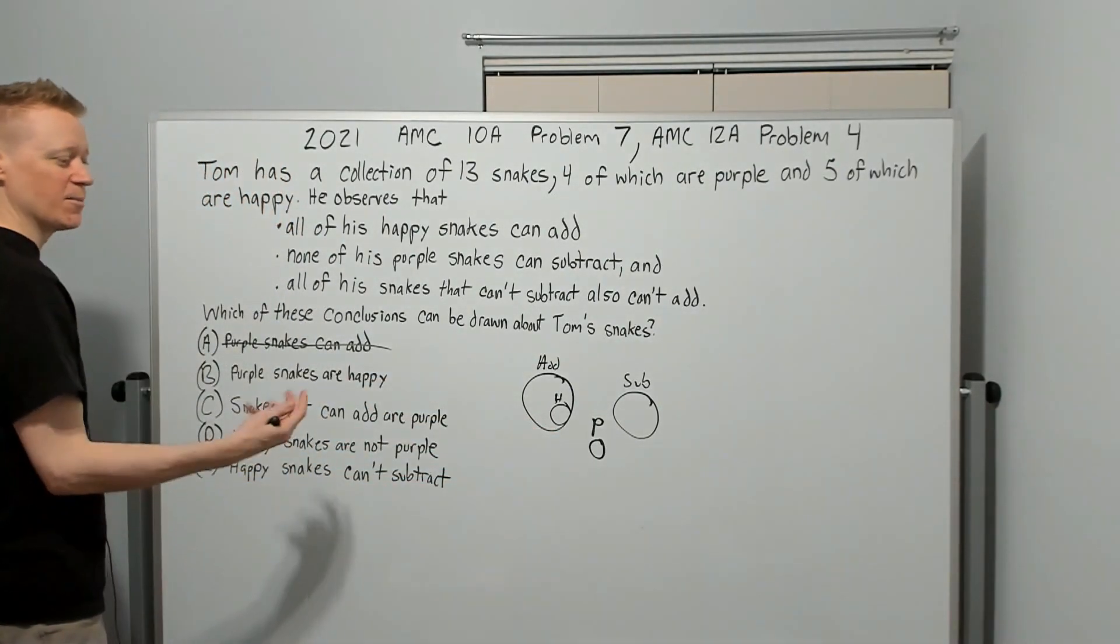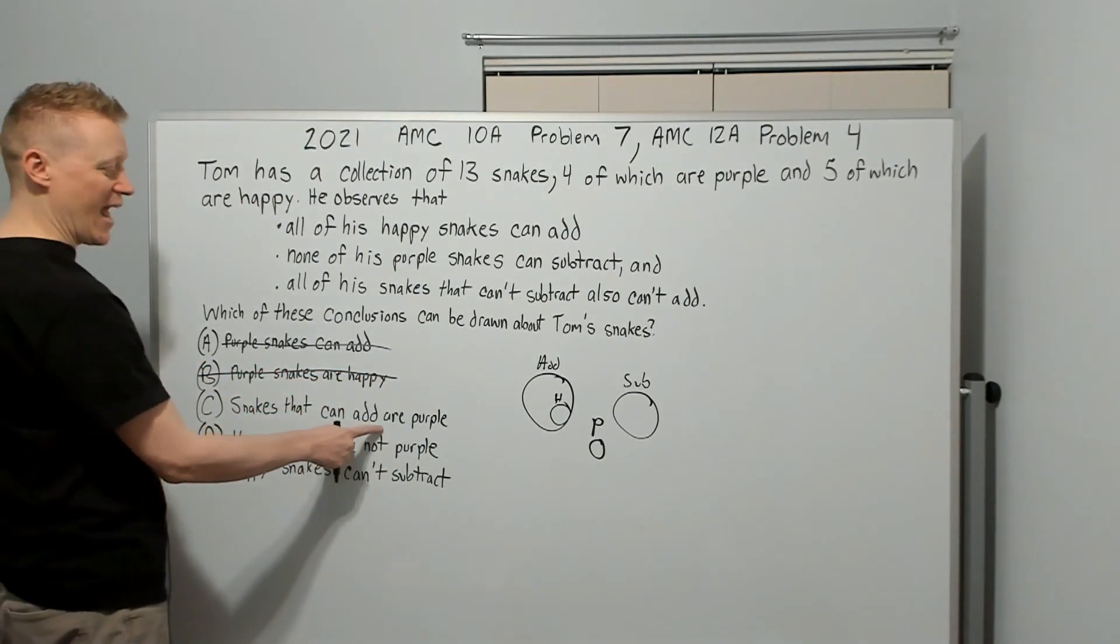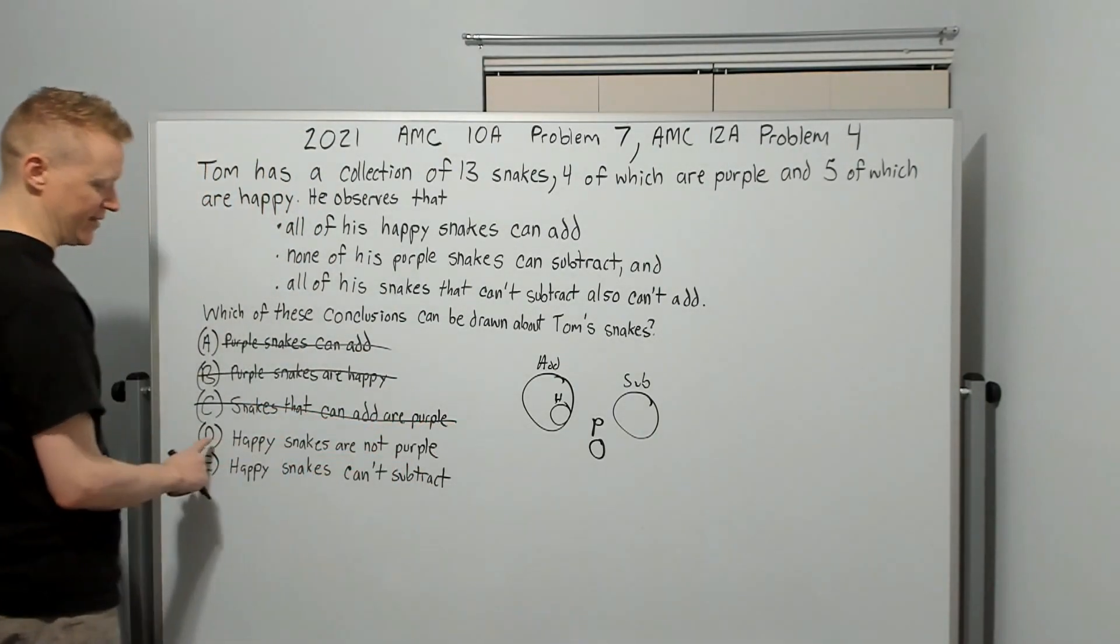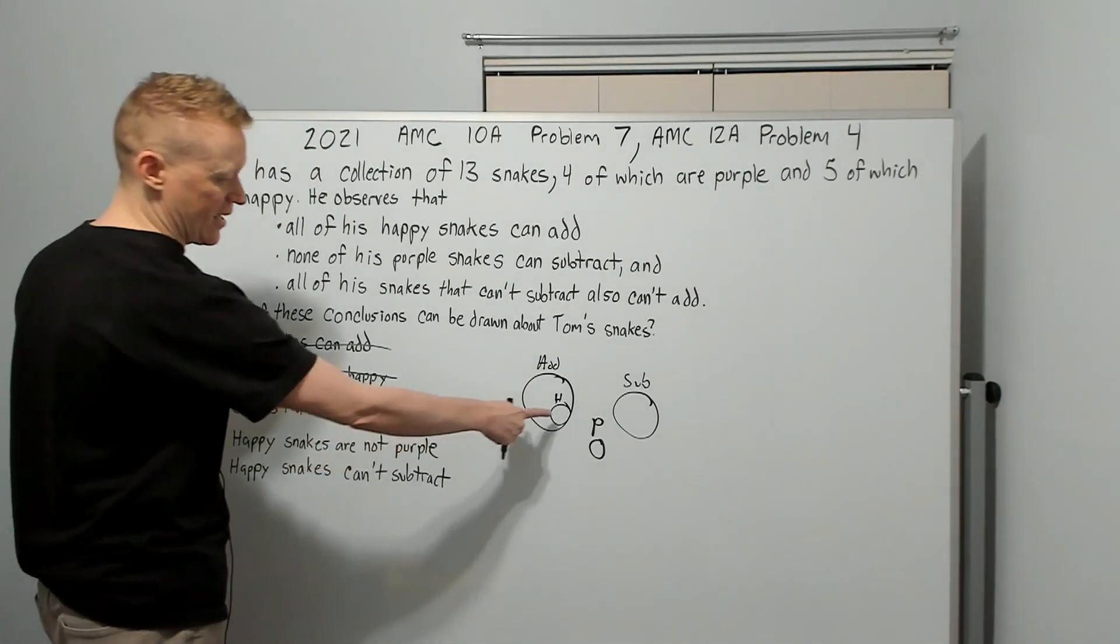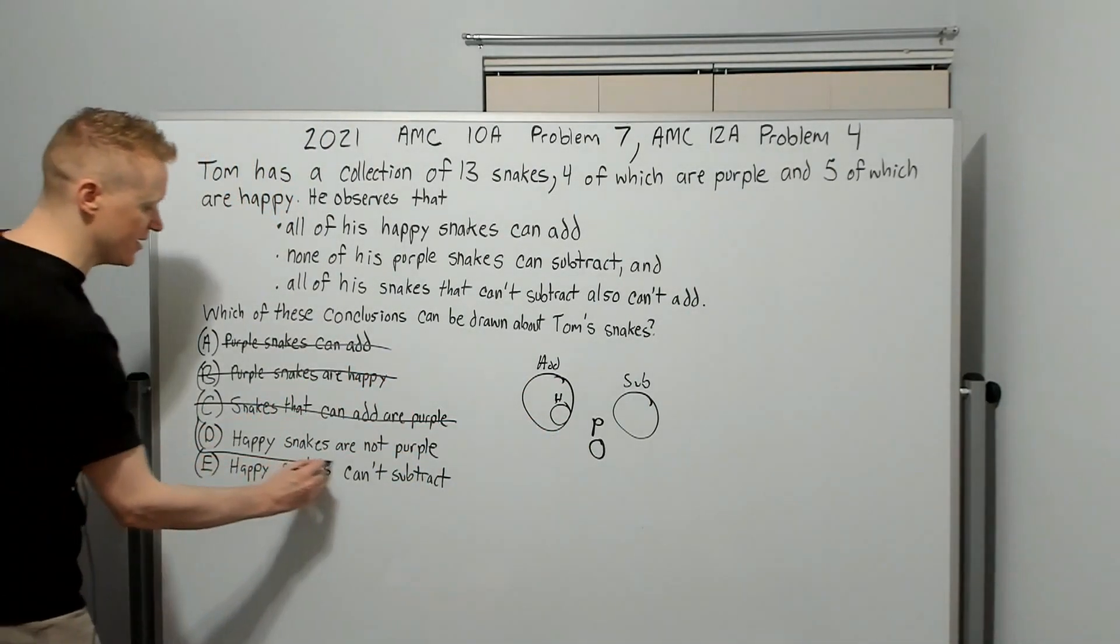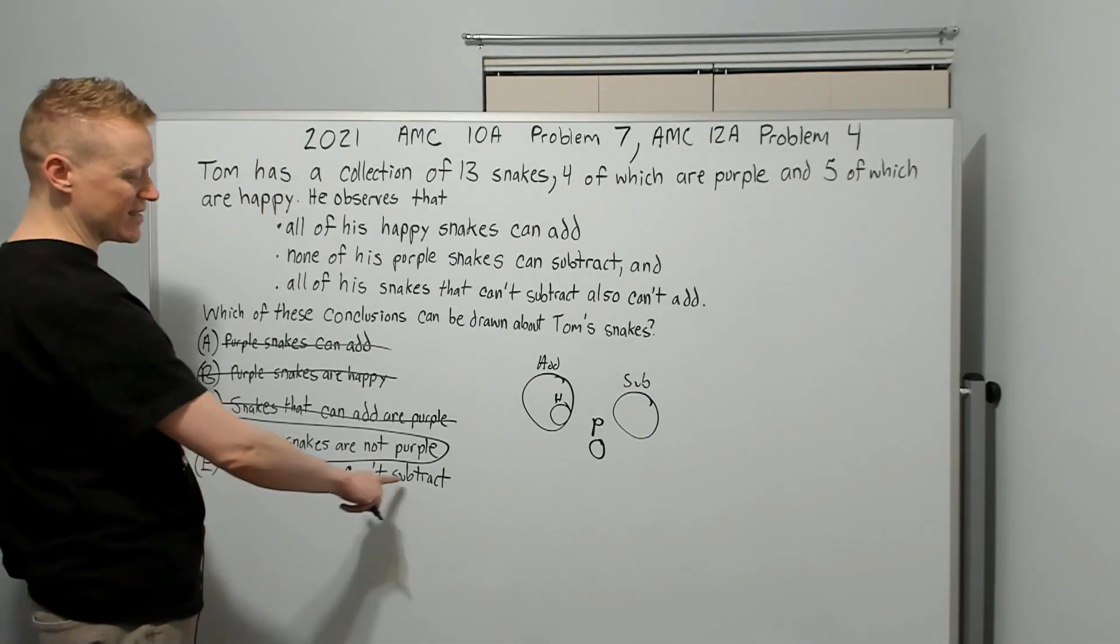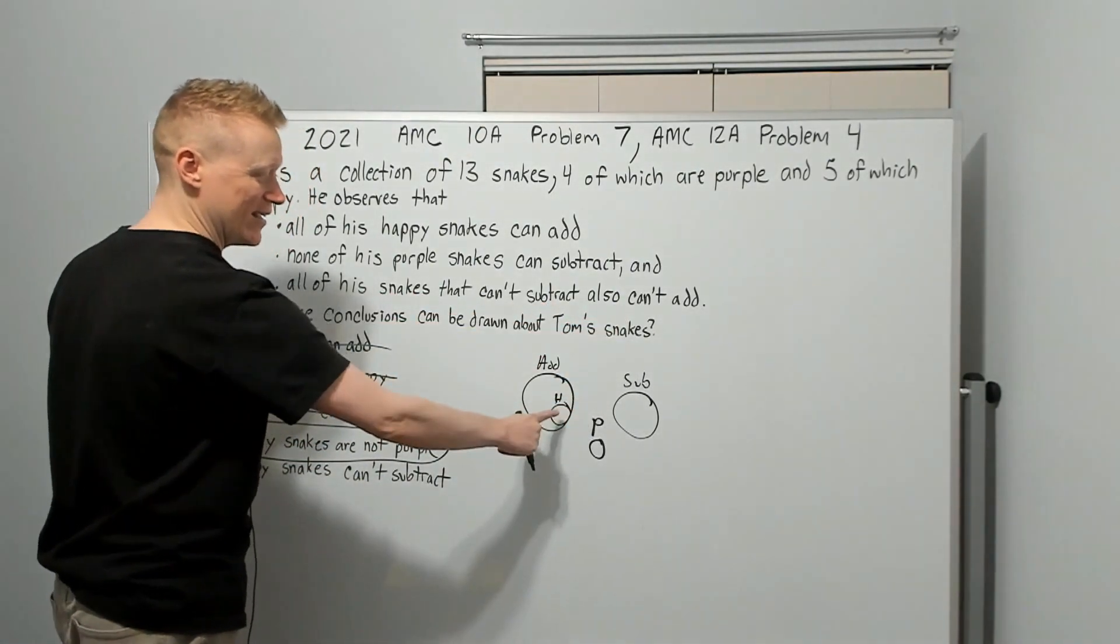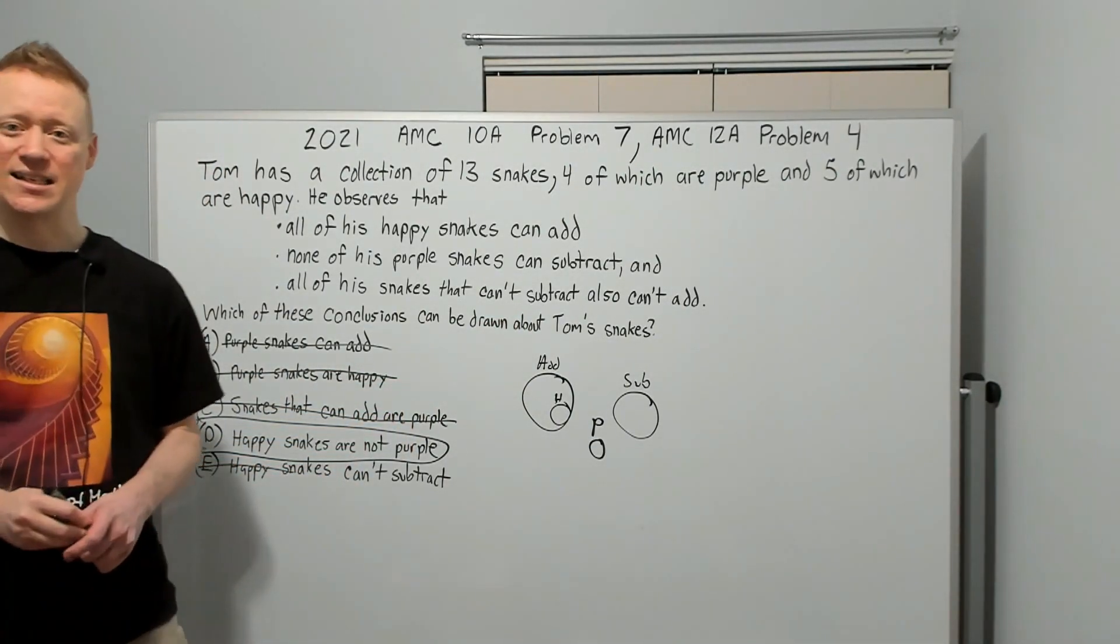Which of these conclusions can be drawn about Tom's snakes? A. Purple snakes can add. And we just cleared that up. No, they cannot add. B. Purple snakes are happy. All of the happy snakes are in the add circle. So the purple snakes are not going to be part of that group. Snakes that can add are purple. No, they're not. The first three are pretty easy to eliminate. So happy snakes are not purple. Happy snakes, all within add. Purple snakes out there looks pretty good to me. It's probably D. Happy snakes can't subtract. All snakes that can't subtract can't add. And happy snakes can add. Definitely not E. Answer choice D.